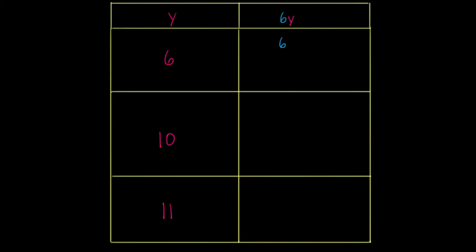I have six times y, and in this case, I'm gonna substitute six in for y. So six in for y here, so it's really six times six. Now notice I'm putting parentheses around this second six, because I'm gonna multiply six times six.